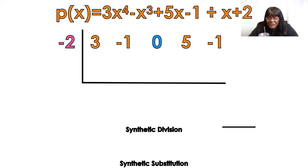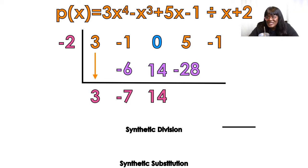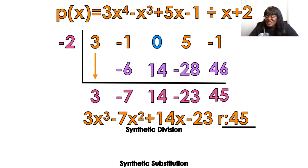Once you've got that, bring down your first number. Multiply the outside number times the bottom number: negative 2 times 3 gives negative 6. Add those two numbers: negative 1 plus negative 6 is negative 7. Multiply the outside numbers to get positive 14. Add: 0 plus 14 is 14. Multiply: negative 2 times 14 gives negative 28. Add: 5 plus negative 28 is negative 23. Multiply: negative 2 times negative 23 is positive 46. Add: negative 1 plus 46 is 45. That last number is your remainder. My original problem was x to the fourth, so my answer starts with x to the third. Coefficients give me 3x cubed minus 7x squared plus 14x minus 23, remainder 45 over x plus 2.